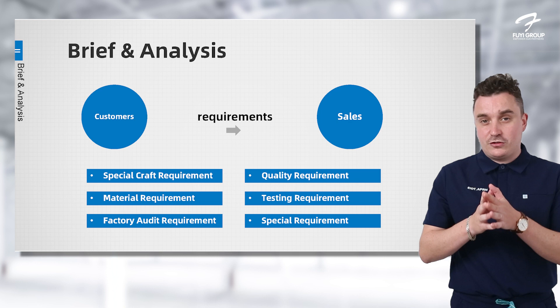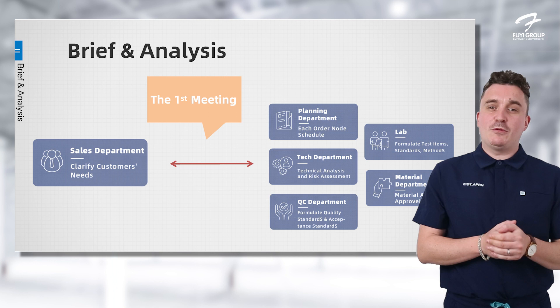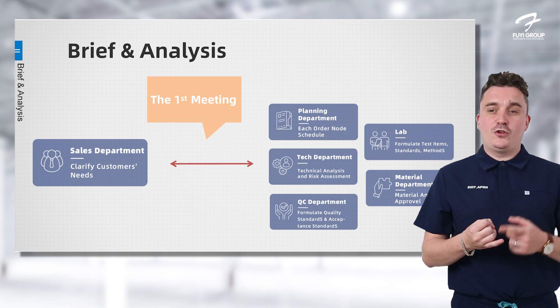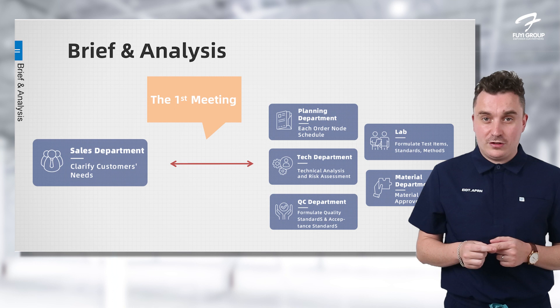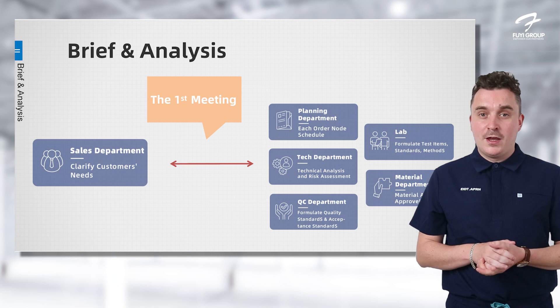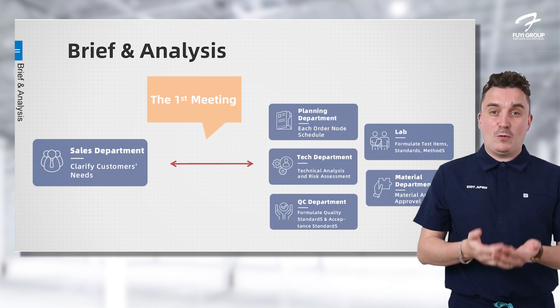Once your needs and demands have been clarified with our sales team, we move on to the next step. The sales team will talk to our internal departments — the QC department, planning department, tech department, our lab, and our material specialist — who will review all the individual requirements and determine if we can actually make them for you. Once we've discussed this internally, we'll come back to you about how and when we can make the products.